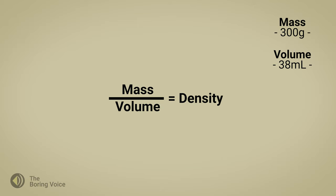I divide the mass of 300 grams by the volume of 38 milliliters, and that gives me a density of 7.9 grams per milliliter.